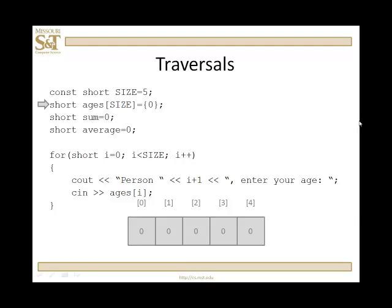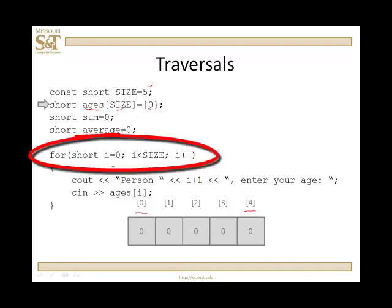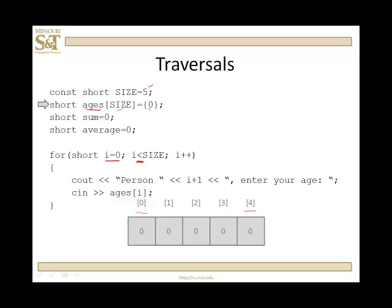We're going to begin with traversal simply to read in some information from users. We've declared a constant SIZE to be 5, an array of ages of size 5, and initialize them all to zero. We have a sum, an average we set to zero, and then a for loop that's going to traverse the array. Remember that the indices on the array run from zero to size minus one. This is extremely important.